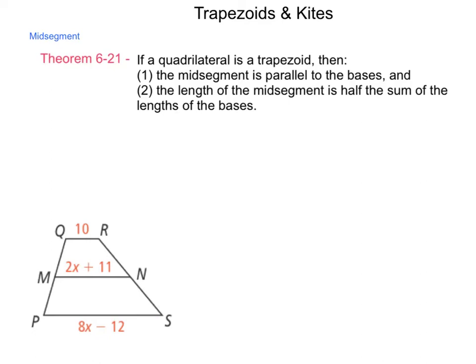For part two, this is part of how we derive the formula for area of a trapezoid, which we will be studying later. So the sum of the two bases divided by two is the length of that midsegment.